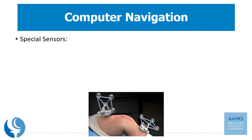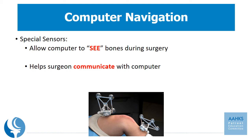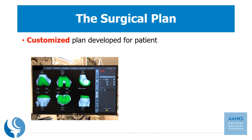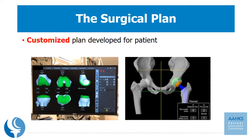Computer navigation requires special light or magnetic sensors to allow the computer to see the bones during surgery and to allow the surgeon to communicate with the computer. Some of these systems require separate incisions to place the sensors directly on the bone so that they do not move during surgery. The surgical plan is carefully reviewed by the surgeon and can be modified to ensure proper positioning of the implants so they will function well for the patient. Below are some examples of computerized plans used during knee or hip surgery.